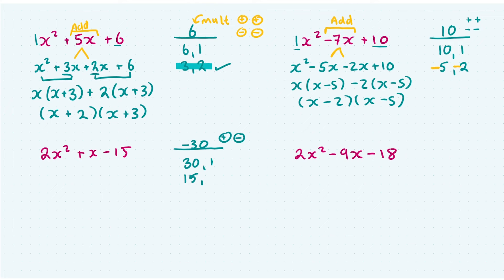So let's list the factors of 30 anyway. We'd have 30 and 1. We'd have 15 and 2. We'd have 10 and 3. Then we'd have 6 and 5. And I need to add to make the number in front of x, which is a positive 1. So which pairs from our factors with a positive and a negative sign will give us 1?